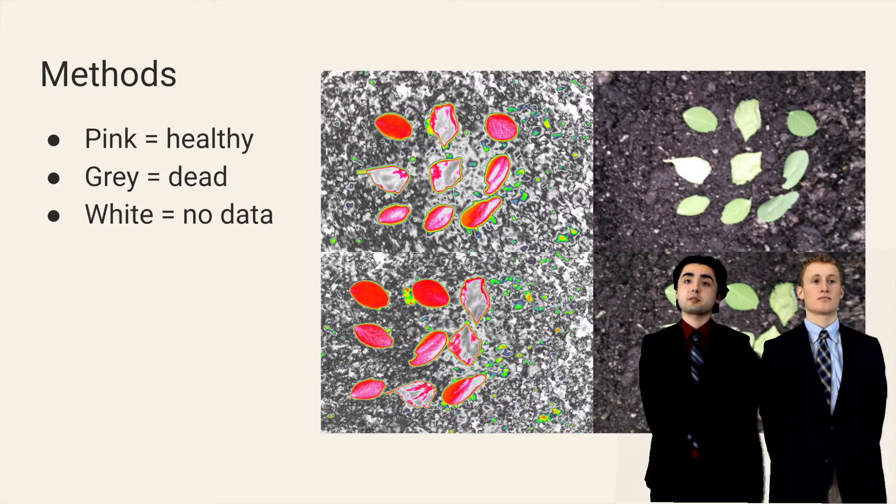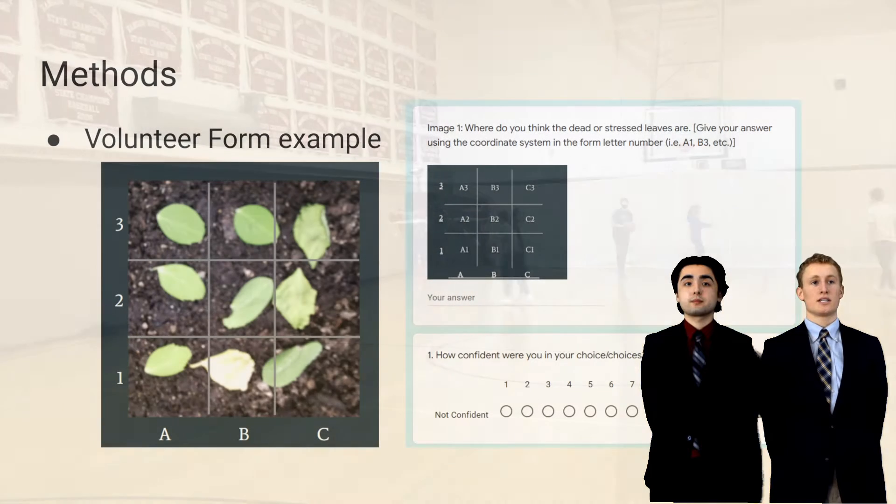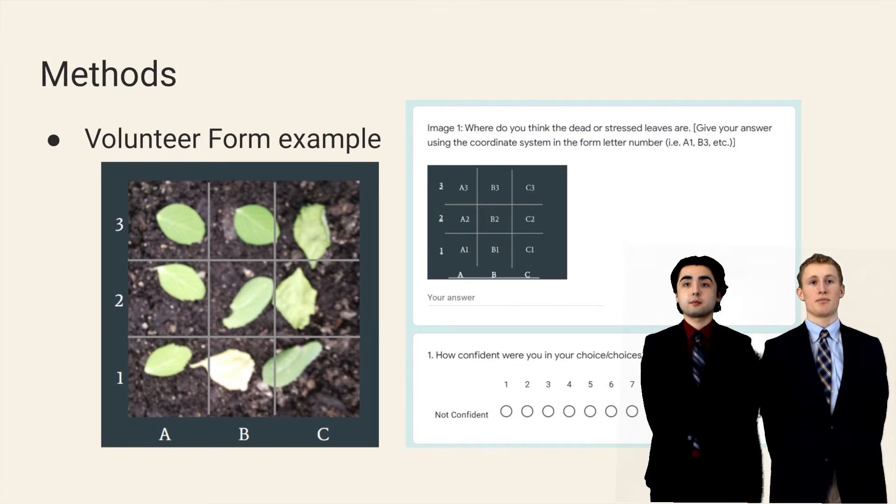We tested the camera system and drone separately. The drone was flown in the gym and its maneuverability was assessed. To test the camera system, we arranged nine plant leaves in a 3x3 grid. Eight images were captured and the location of the three dead leaves were varied between each image. Volunteers were then shown the images and asked to identify the dead leaves.